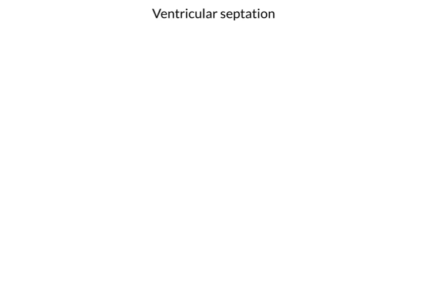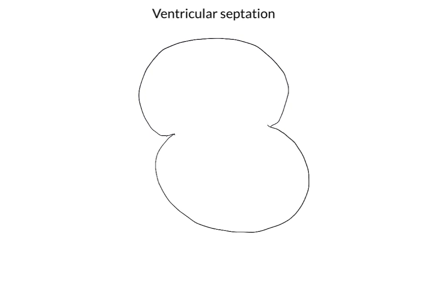I'm going to draw a very simple outline of the entire fetal heart here. So here is the common atrium, here is the atrioventricular junction, and here is the ventricle. The ventricle, of course, has a muscular wall, and we'll depict that with this wavy line here, just showing the lumen of the common ventricle.